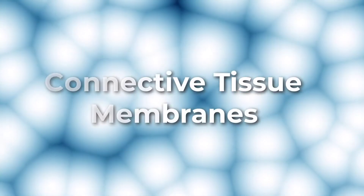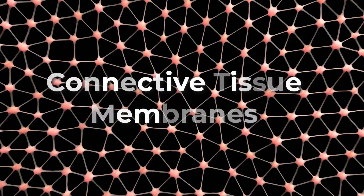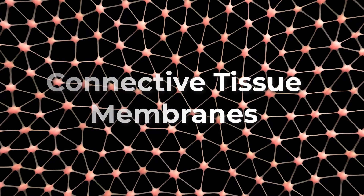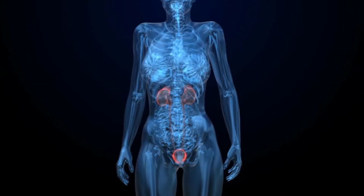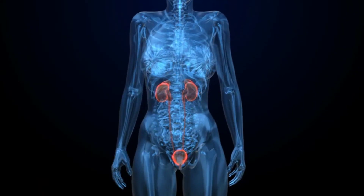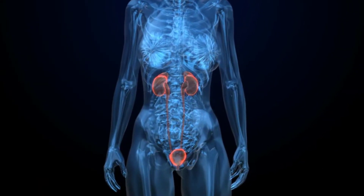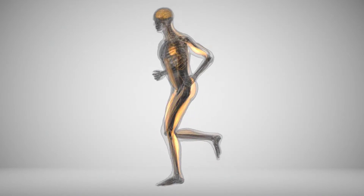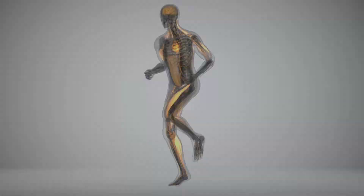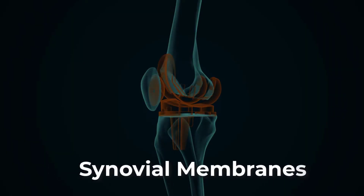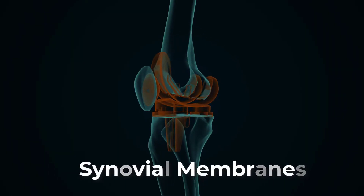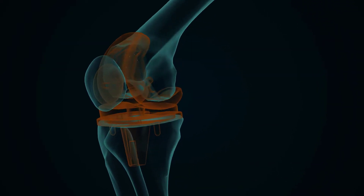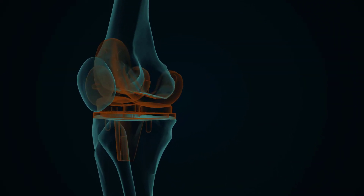The connective tissue membrane is formed solely from connective tissue. These membranes encapsulate organs such as the kidneys and line our movable joints. A synovial membrane is a type of connective tissue membrane that lines the cavity of freely moving joints.